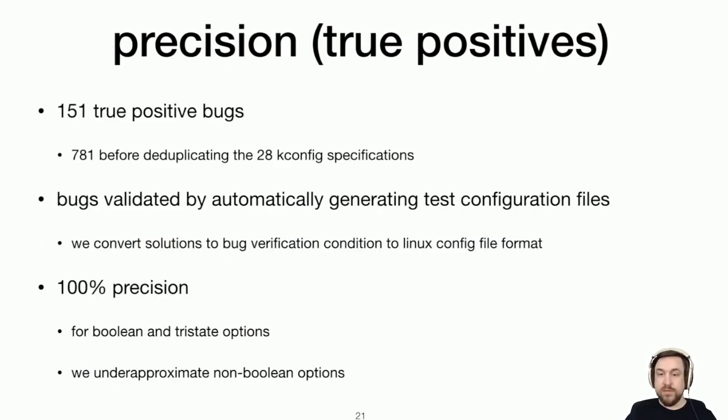So first we evaluated the precision, how many true positives we got from this, and how well that compared to any false positives. And so we found 151 true positive unmet dependency alarms that we confirmed by generating test configuration files automatically. And it turned out that we got this with 100% precision, which means our model was really, really accurate for the kconfig language.